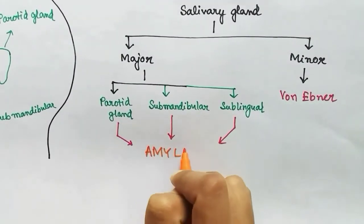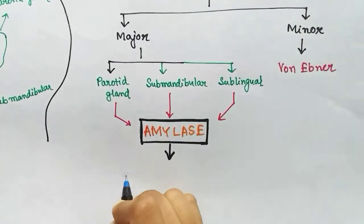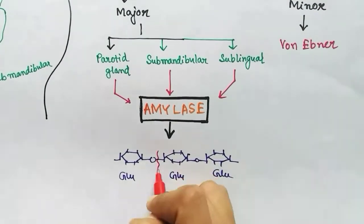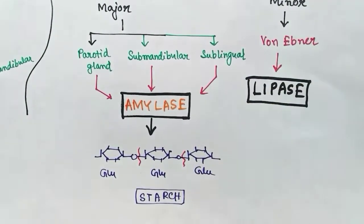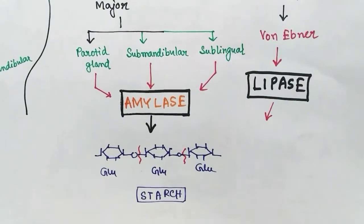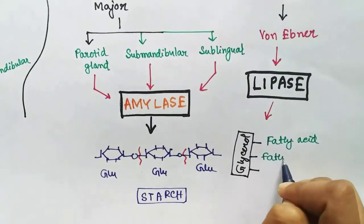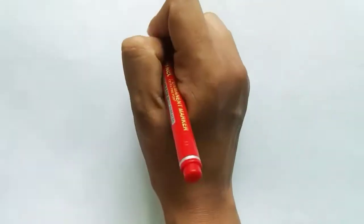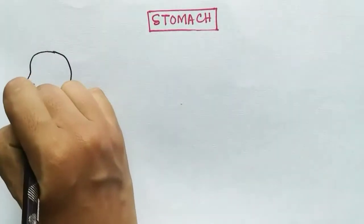All of the salivary glands release an enzyme called amylase, which can digest carbohydrates, especially starch. Amylase breaks the bonds between two glucose molecules. Another enzyme released in the mouth is lingual lipase, which is released by the minor salivary gland — von Ebner's gland. Lingual lipase is responsible for breaking the ester bonds of lipids or fat.